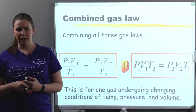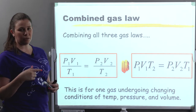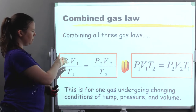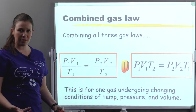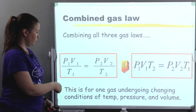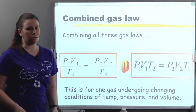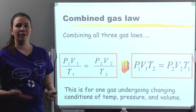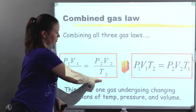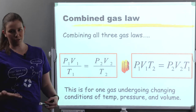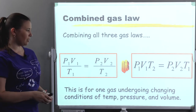So first, the combined gas law. The combined gas law literally combines all three gas laws. You can even see them all within the combined formula. P1 V1 equals P2 V2 — that's Boyle's law. P1 over T1 equals P2 over T2 — that's Gay-Lussac's law. And V1 over T1 equals V2 over T2, which would of course be Charles' law. So all three laws put together into the combined gas law.